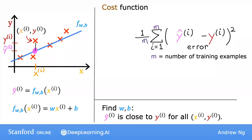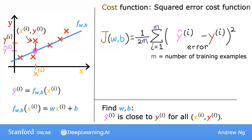We're nearly there — just one last thing. By convention, the cost function that machine learning people use actually divides by 2 times m. The extra division by 2 is just meant to make some of our later calculations a little bit neater, but the cost function still works whether you include this division by 2 or not. This expression is the cost function, and we write J of w,b to refer to it. This is also called the squared error cost function, and it's the most commonly used one for linear regression and for all regression problems.